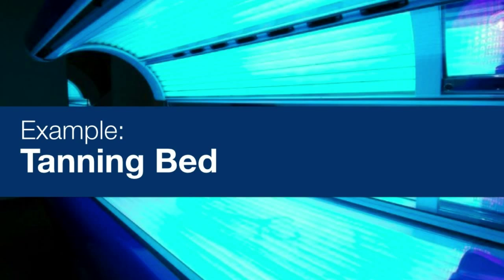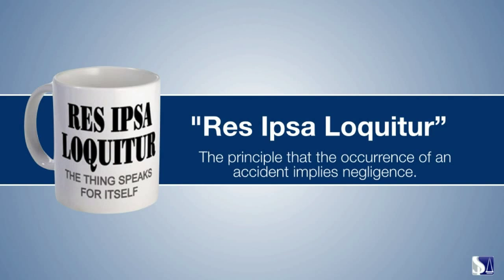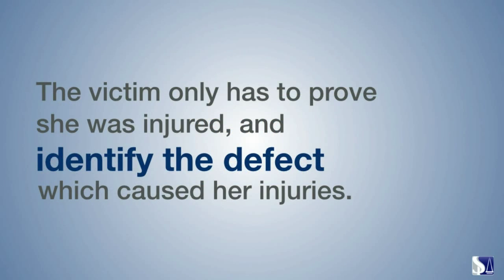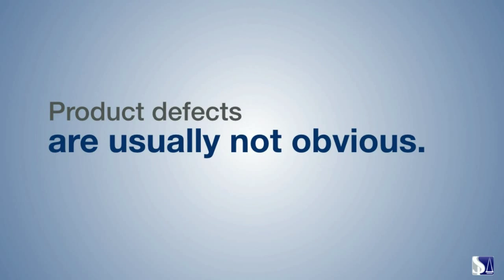There's a Latin term, Res Ipsa Loquitur, that we want to discuss for a moment. In defective product cases, the victim doesn't need circumstantial evidence to prove the manufacturer was negligent — the victim only has to prove she was injured and identify the defect which caused her injuries. To identify a product's defect, the victim and her attorney may have to go through an intense pretrial discovery process. Product defects are usually not obvious; an attorney may have to subpoena design documents, depose the company's product designers, conduct independent product testing, and more. The case may fall apart and be dismissed if the victim can't identify the defect.